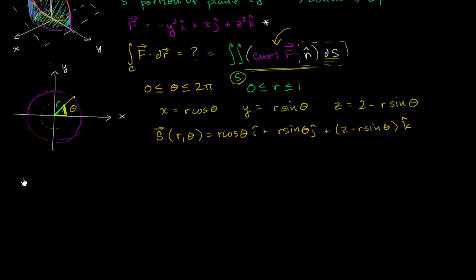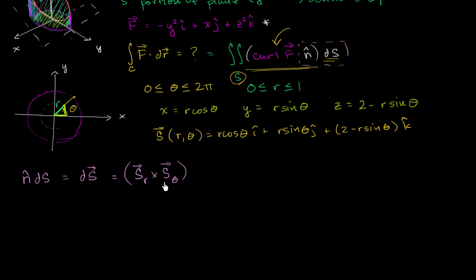We already know that n, our normal vector, times our surface differential can also be written as a vector version of our surface differential that points in the same direction as our normal vector. This is going to be the partial derivative of the parameterization with respect to one parameter crossed with the partial derivative with respect to the other parameter — without taking the absolute value, since we need a vector — times the differentials d theta, dr. We can swap the differentials, but we can't swap the cross product terms because that would change the direction of the vector.